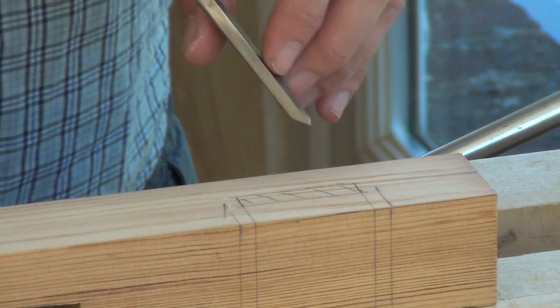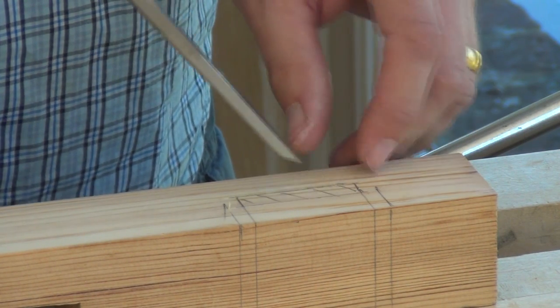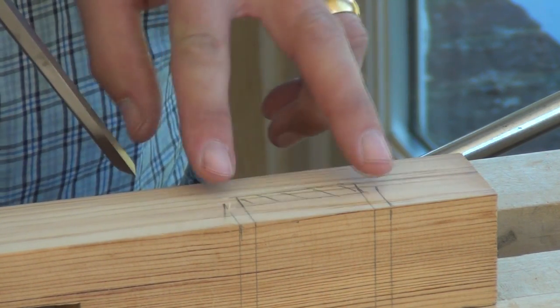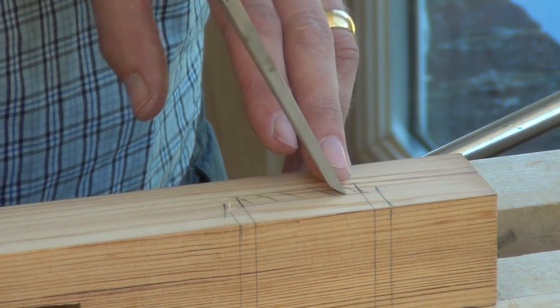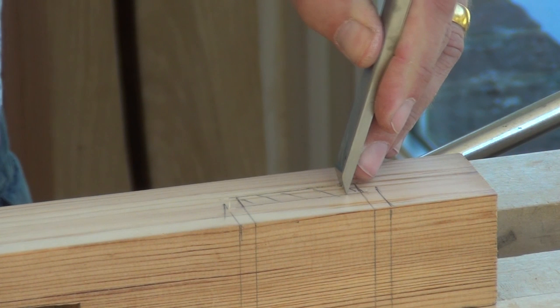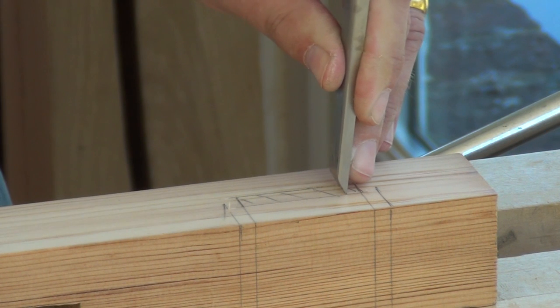There are loads of videos on chopping mortises. So I won't take too much time over this one. Basically I start within my two end lines. Because I want to preserve those until the last minute. And I just chop down with the bevel towards the middle of the mortise. The chisel held perpendicular in both planes.